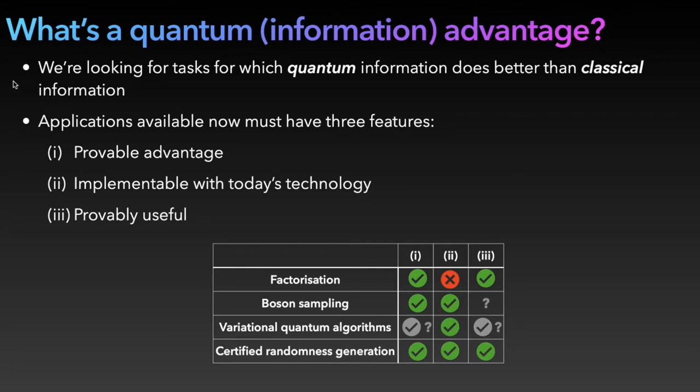We can also implement it with today's technology. Actually in Candela, we already implemented it in a photonic way. And it is probably useful because random numbers are a valuable resource for many applications such as cryptography or numerical simulations. This way of generating and certifying randomness is one example of an application that checks these three boxes. It certifies the generation of randomness independently of the device that we used, which is why we call it certified device independent randomness generation.